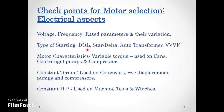Motor torque characteristics are another checkpoint. Variable torque is used for fans, centrifugal pumps, and compressors. Constant torque is used for conveyors and positive displacement pumps and compressors. Constant horsepower (power) is used for machine tools and winches. The required torque type depends on the application.